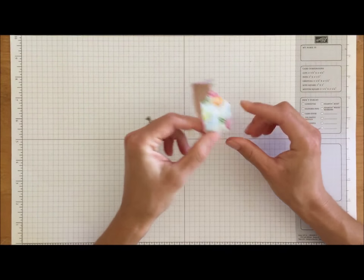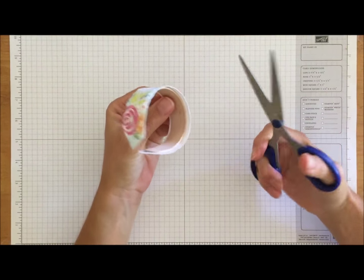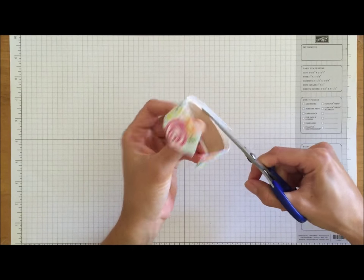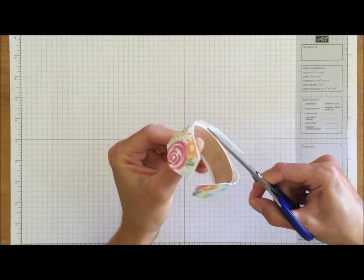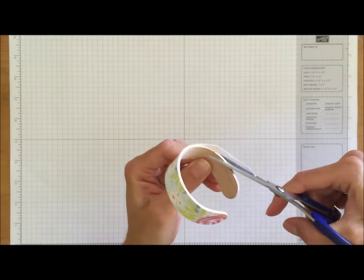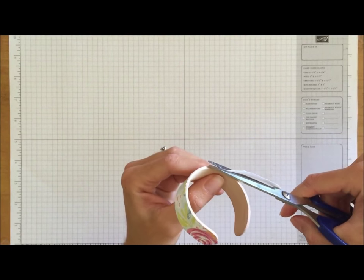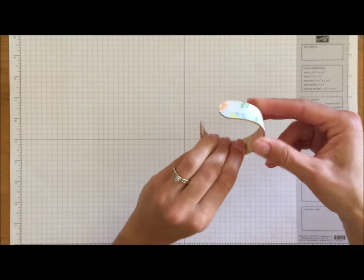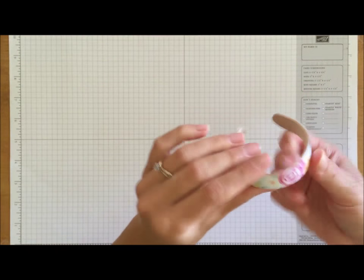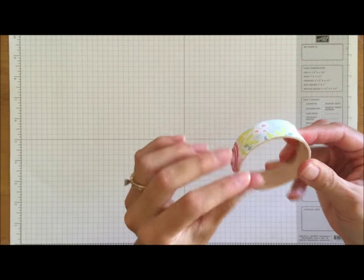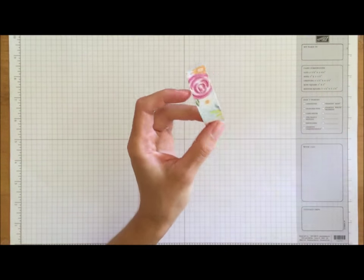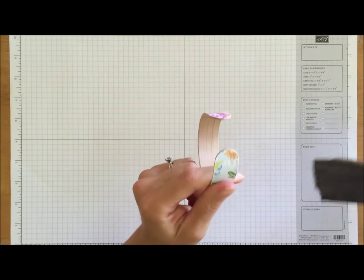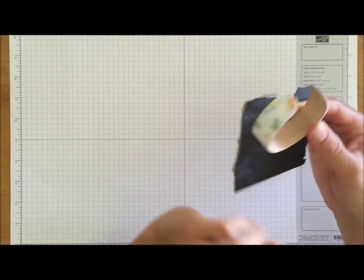Alright once the glue has dried you can trim off the excess with some scissors. Just trim as close to the bangle as you possibly can. Okay, there you have it. That's a fairly easy step. The edges may appear to be a little rough and they may be in need of a little sanding, but I wouldn't sand too much especially if your glue is still a little wet. And honestly that step may not even be required.